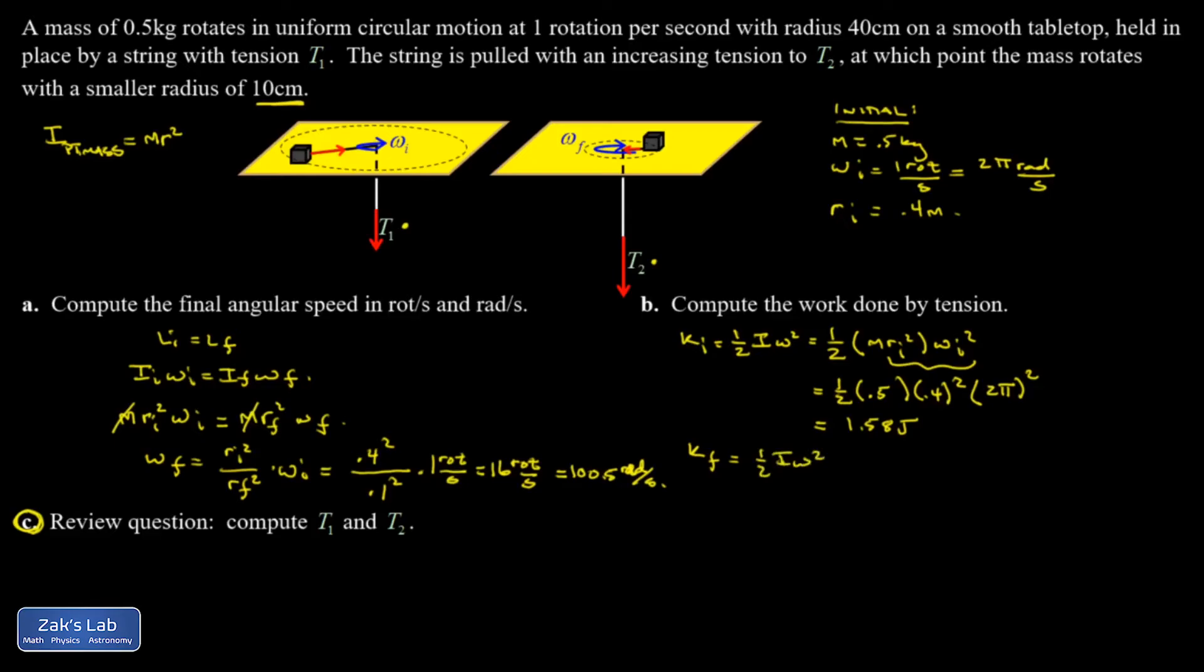In my final state, 1/2 I omega squared, that's 1/2 m r final squared, omega final squared. So 1/2 times 0.5 times 0.1 squared, omega final squared. That's 100.5 radians per second all squared. And I get 25.25 joules for this.